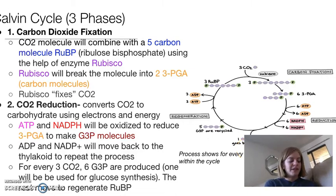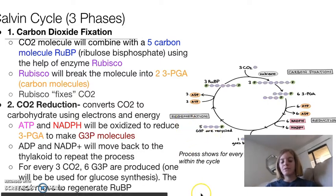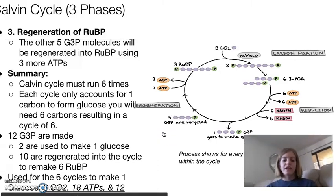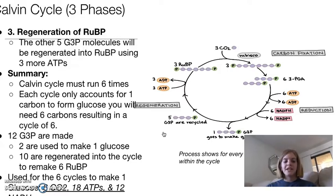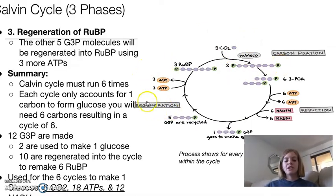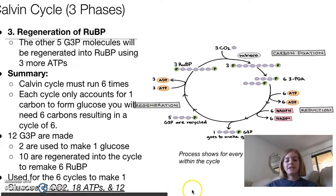One of these G3P gets used to make glucose, and the rest move on to the last part of the Calvin cycle: the regeneration of RUBP. The other five G3P molecules are regenerated into RUBP, which allows us to restart the cycle. Remember, those RUBP are going to combine with the CO2 with the help of rubisco and form that six carbon molecule. The regeneration of RUBP actually costs us three ATPs.